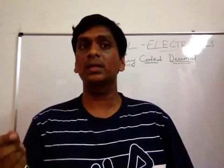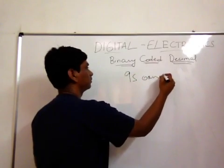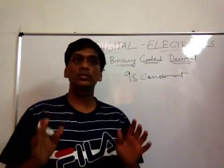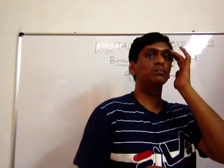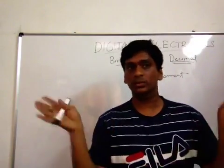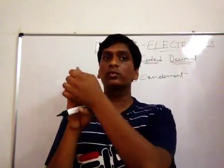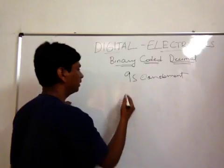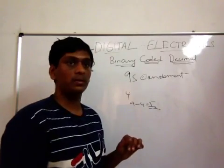We will use the nines complement and the tens complement methods. First, what is the nines complement? In one's complement, when you have zero it becomes one and vice versa. The nines complement works differently — for example, if you have four, you subtract four from nine: nine minus four equals five. So the nines complement of four is five.